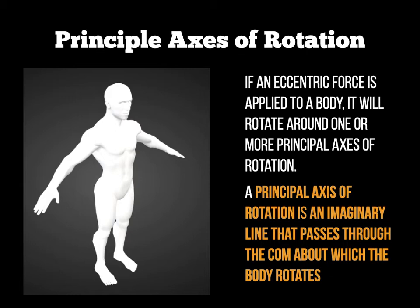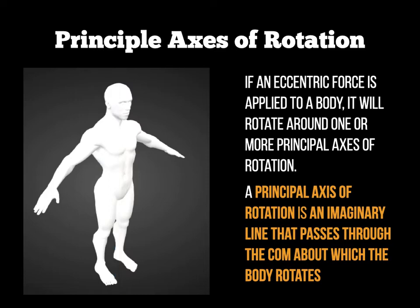Looking at our human picture on the left: the first axis is the longitudinal axis, which runs from top to bottom and enables someone to spin, turn, or pivot. The second axis is the transverse axis, which runs from right to left and allows a person to do a somersault — imagine a skewer going through that person so they can flip forwards or backwards. Somersaults or rolls are good examples of the transverse axis.